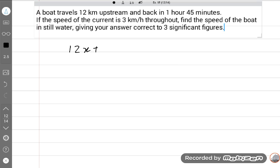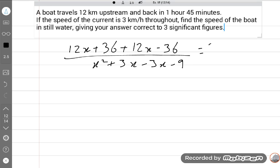12x plus 36 plus 12x minus 36 upon x squared plus 3x minus 3x minus 9 is equal to 7 upon 4. This will cancel. 24x upon x squared minus 9 is equal to 7 upon 4. So there is cross multiplication.